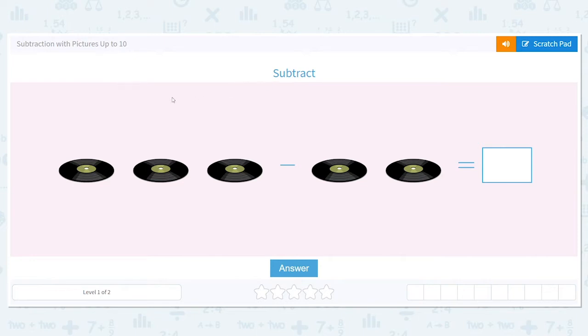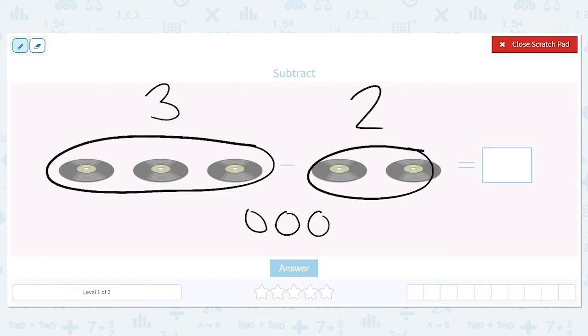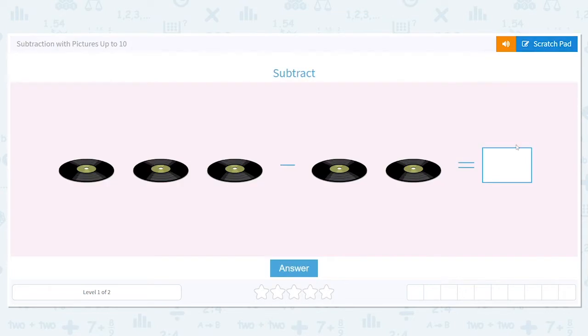So our first picture says subtract and it has records here. Now to help me I'm going to write down how many records are in each set. So in this first set I'm going to count them. I have one, two, three. And in this second set I have two. So what this is telling me is I had three in all but I'm taking away two of them. So how many would I have left? Three minus two equals what? If this helps you can draw another picture. I'm going to draw three circles and I'm going to take away two of them. What do I have left? One. So my answer is one.